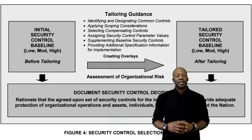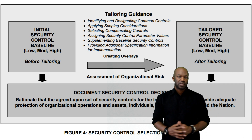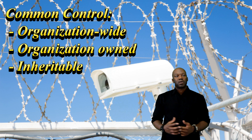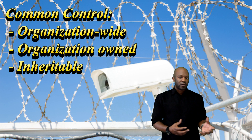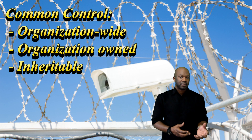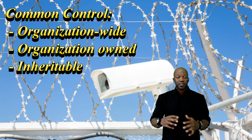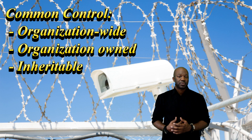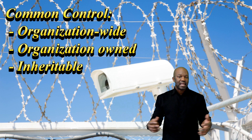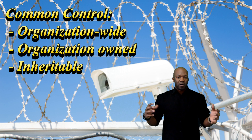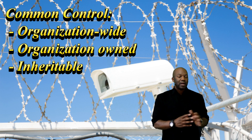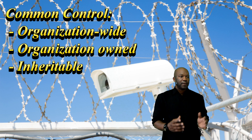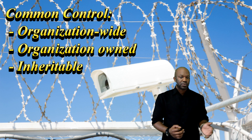Common controls are inheritable controls from the organization as a whole. For example, if our organization has a physically secure building, every time we bring a new server or computer into that system, it inherits all the physical security already surrounding it — fencing, lighting, a security unit, biometrics. All of those things are already there, so that web server will actually inherit all those physical security controls.